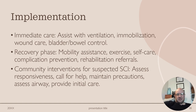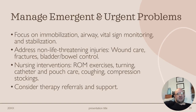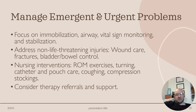Community interventions for suspected spinal cord injury include assessing responsiveness, calling for help, maintaining spinal precautions, assessing the airway, and providing initial care. Emergent and urgent problems focus on immobility, airway management, and vital sign monitoring. Non-life-threatening injuries such as wound care and fractures are also addressed, along with bladder and bowel control.